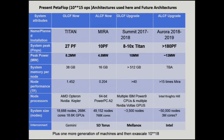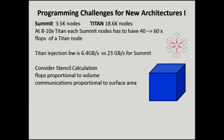Here's your little quiz. Titan has about 18,600 nodes; Summit's going to have 3,500. We're going to hit 8 to 10x performance. So each Summit node has to have 40 to 60 times the performance of a Titan node, in flops. The Titan injection bandwidth is 6.4 gigabytes per second. For Summit, the projected bandwidth is 23 gigabytes per second. Is the communications network going to handle that for a stencil calculation?